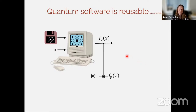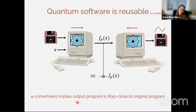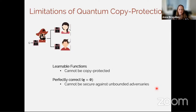Some basic observations: first, quantum software is reusable to a certain extent. If you have a piece of software that functions correctly and produces a classical outcome, you can make a coherent copy of that classical outcome, run the quantum interpreter in reverse, and obtain an approximately correct version of the original input. That's why we're talking about preventing two simultaneous evaluations, not repeated evaluations — repeated evaluations cannot be prevented since quantum software is generally reusable.